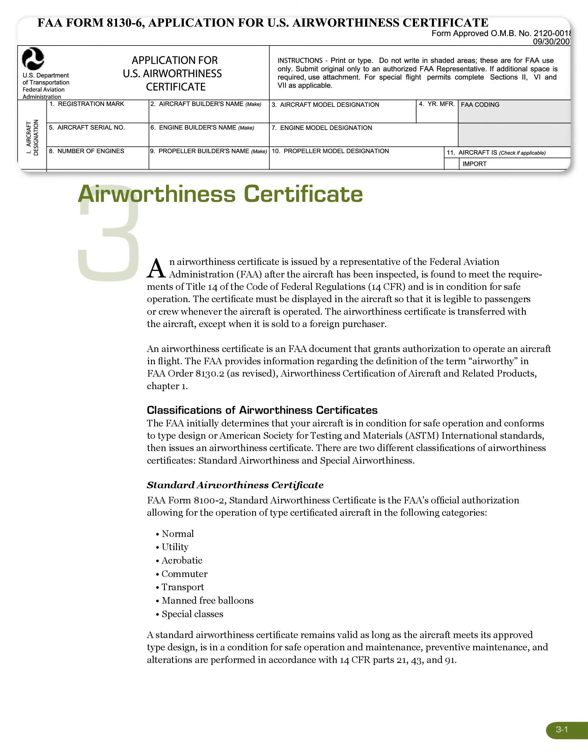Airworthiness Certificate Administration. After the aircraft has been inspected and is found to meet the requirements, an airworthiness certificate is issued by a representative of the FAA. Title 14 of the Code of Federal Regulations, 14 CFR, and is in condition for safe operation. The certificate must be displayed in the aircraft so that it is legible to passengers or crew whenever the aircraft is operated. The airworthiness certificate is transferred with the aircraft, except when it is sold to a foreign purchaser.